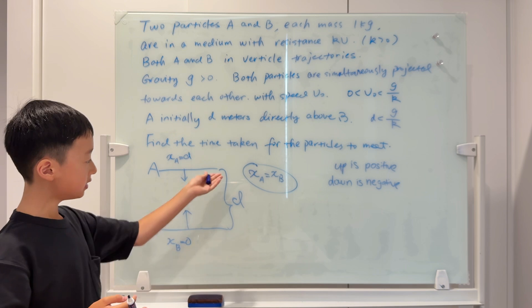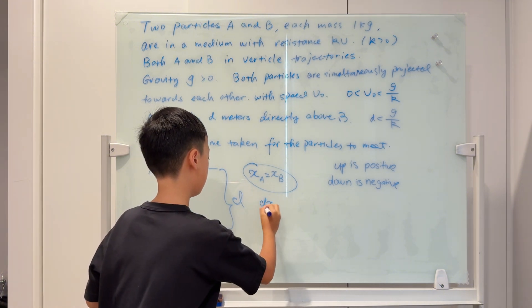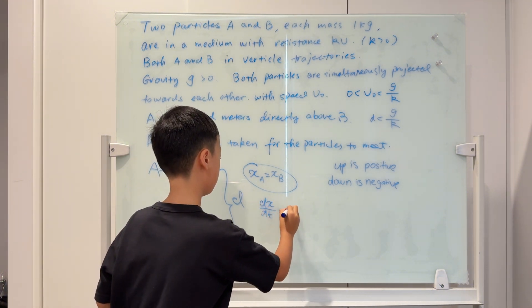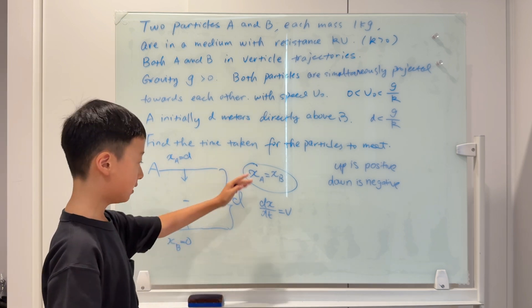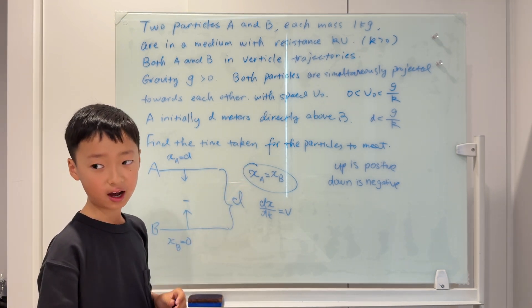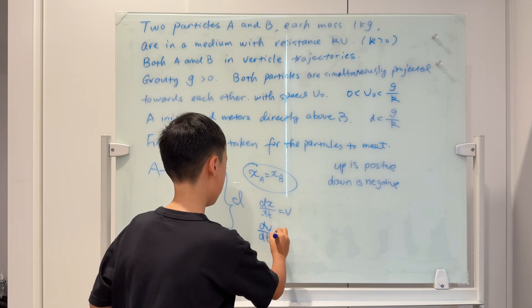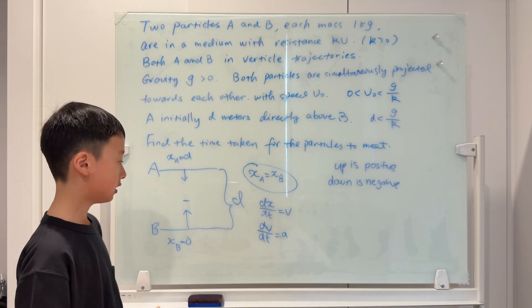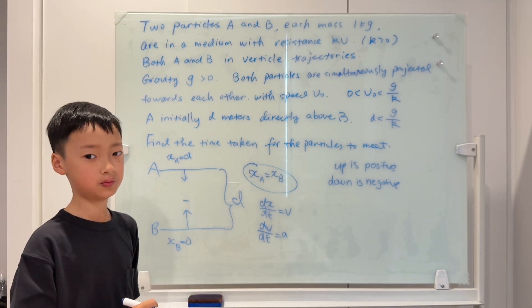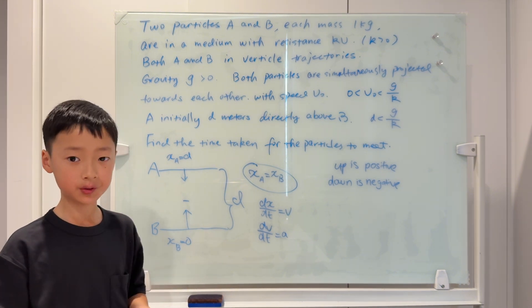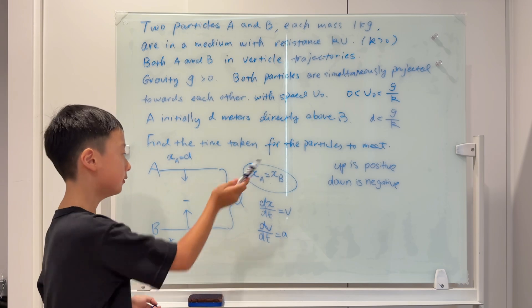Now we need to think about where displacement comes from. We know that dX over dt equals V, so displacement comes from the integral of velocity. And dV over dt equals acceleration, so velocity comes from acceleration. The general way of solving this question is to first figure out the acceleration, then integrate to get velocity, and then integrate again to get displacement.